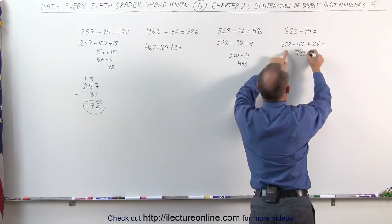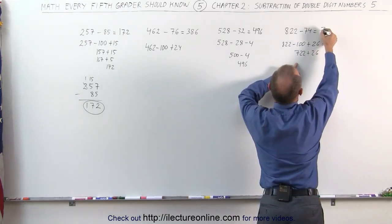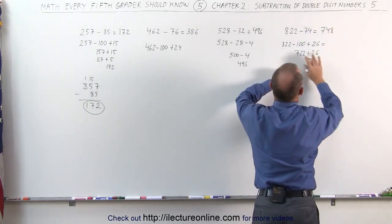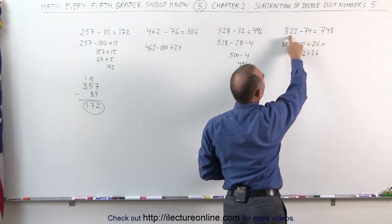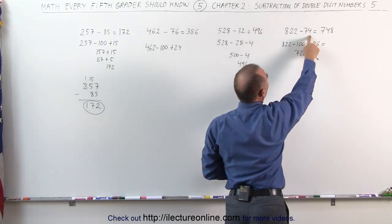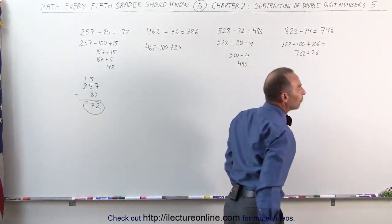That becomes 722 plus 26. 2 plus 2 is 4, 2 plus 6 is 8. This becomes 748. Again, without writing any of that down, I simply subtract 100, that gives me 822, the difference is 26. 22 plus 26, 2 plus 2 is 4, 2 plus 6 is 8, 748.